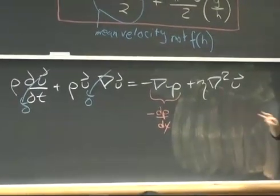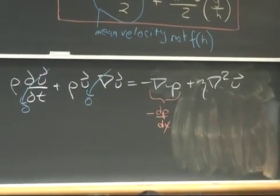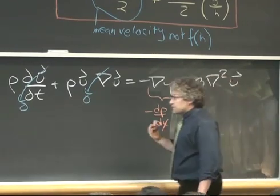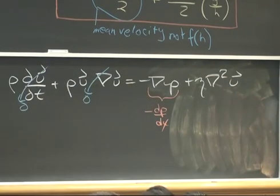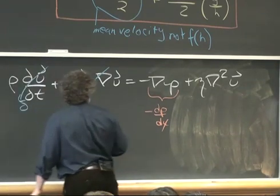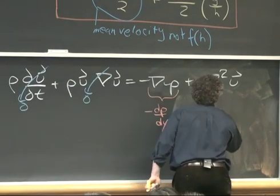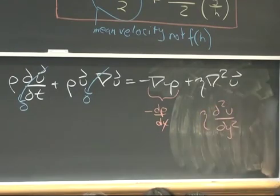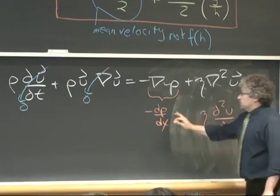So because I've said this pressure, in this case, is only in the x direction, I'll write this as dp dx. Again I have a velocity vector that only has an x component, and it has gradients only in the y direction. And so this is now the simplified version of these two terms.